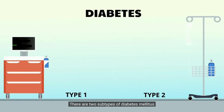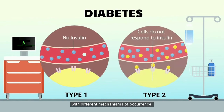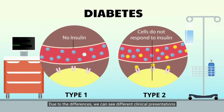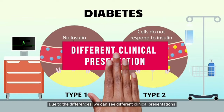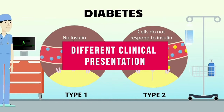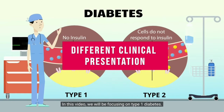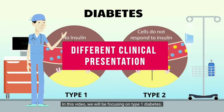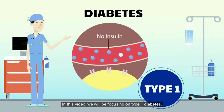There are two subtypes of diabetes mellitus with different mechanisms of occurrence. Due to the differences, we can see different clinical presentations between these two subtypes on individuals affected. In this video, we will be focusing on type 1 diabetes.